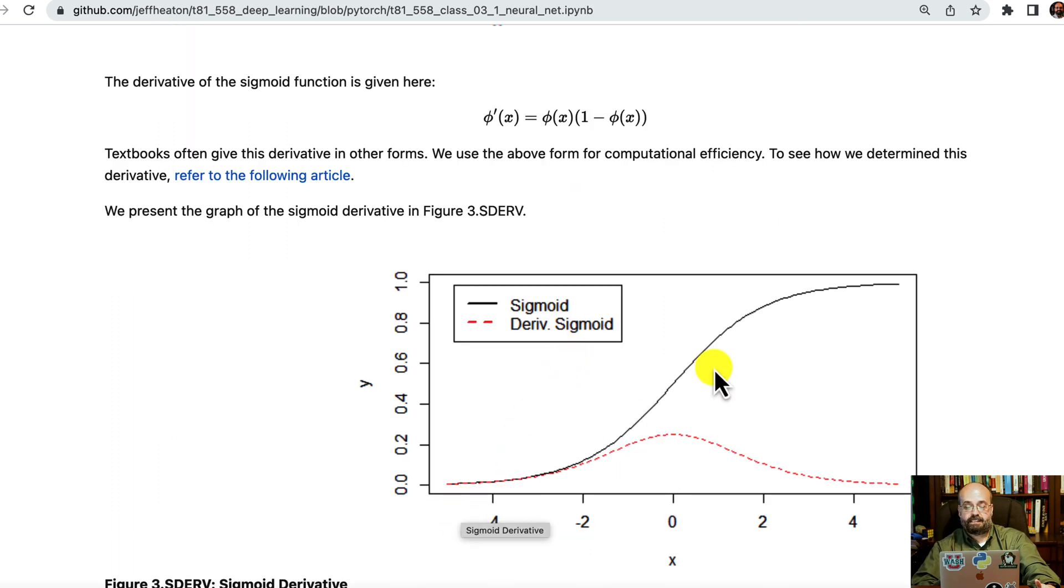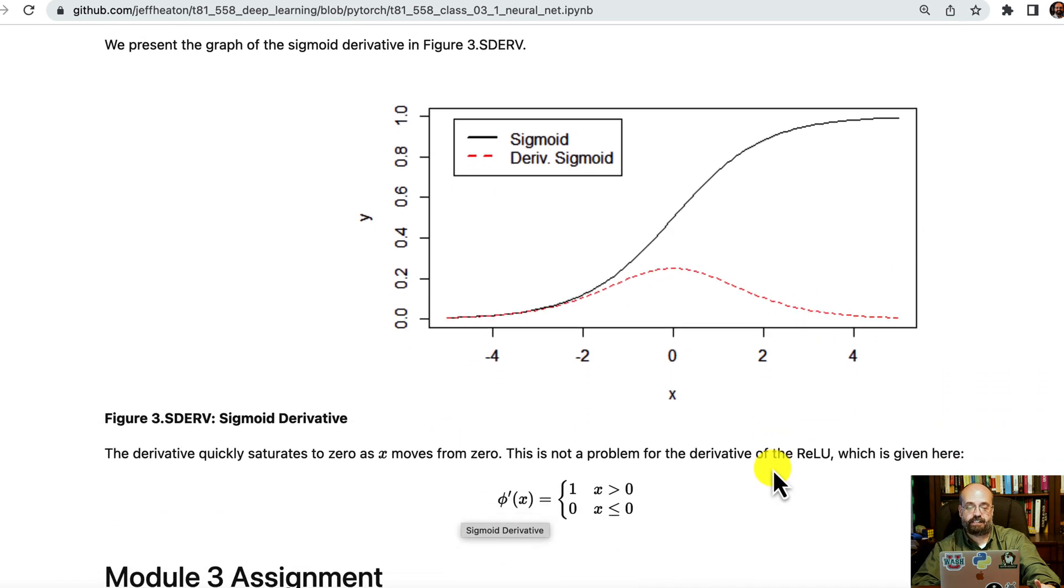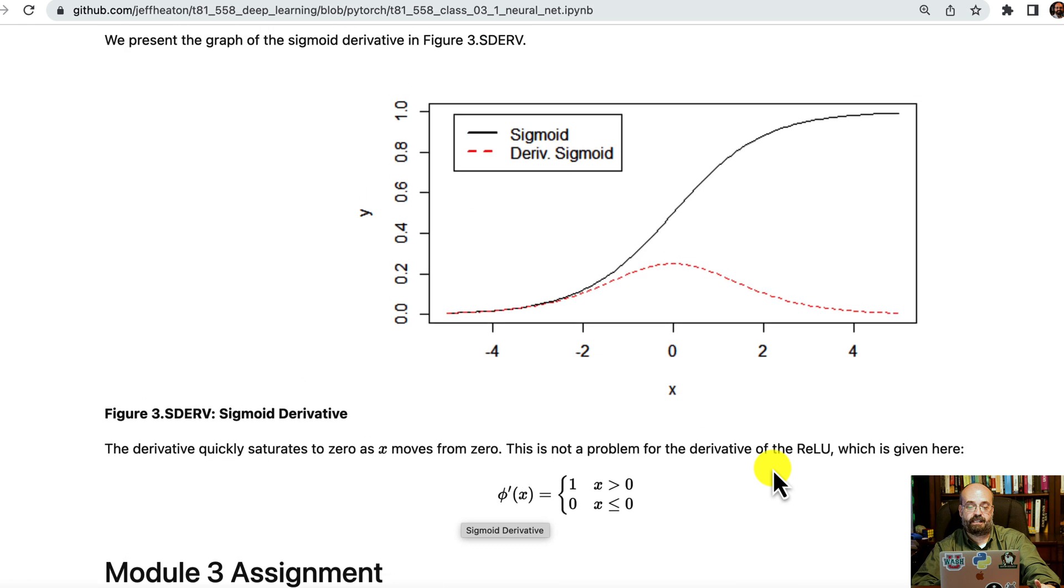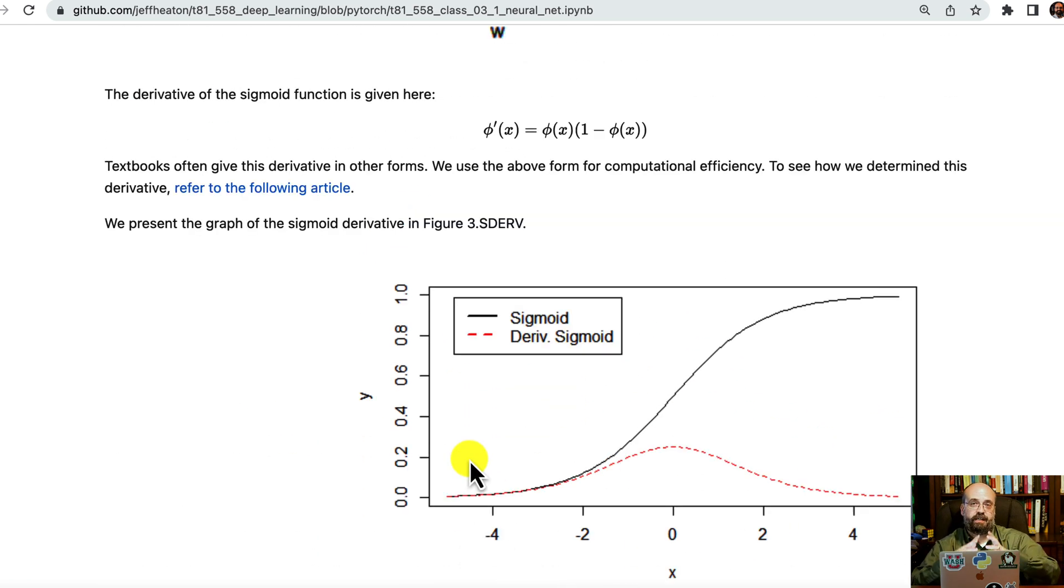And here you can see at the sigmoid, the derivative tends to go to zero at the extreme ends of this, and that leads to the vanishing gradient problem. Whereas the derivative of the rectified linear unit doesn't just get trapped in that zero range.